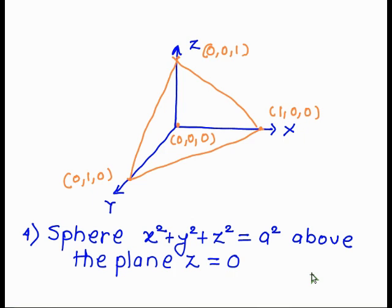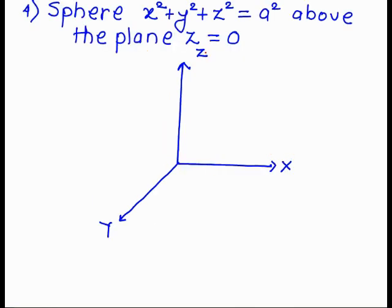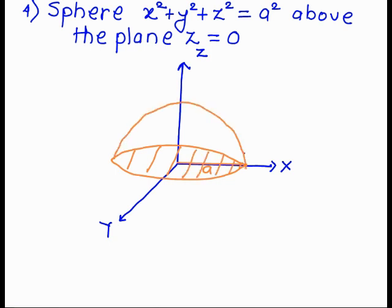Now we draw the sphere x²+y²+z²=a² above the plane z=0. That means we draw a sphere of radius a above the x-y plane. First we draw the x, y, z axes, then draw a circle of radius a in the x-y plane to establish the base of the upper hemisphere.